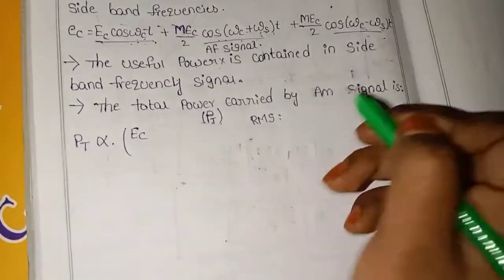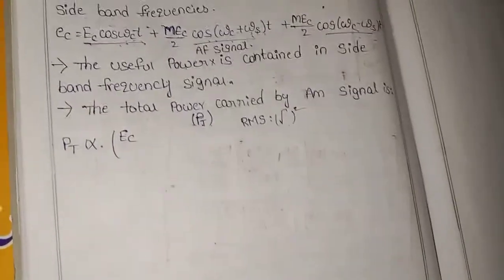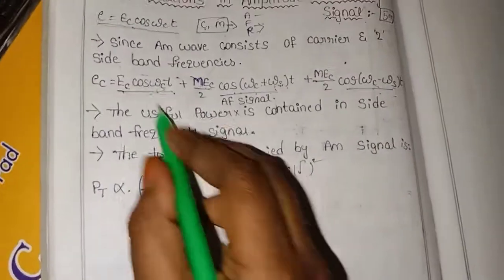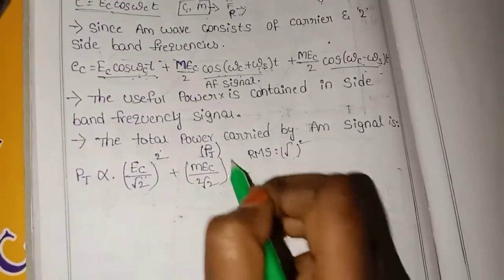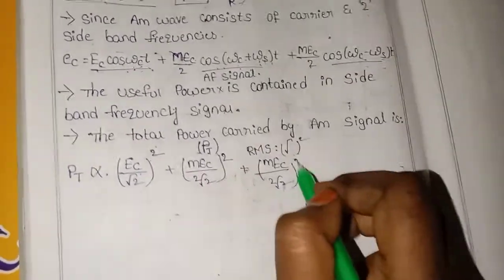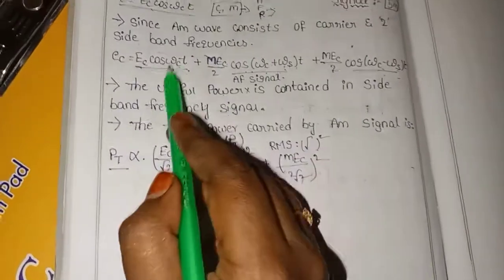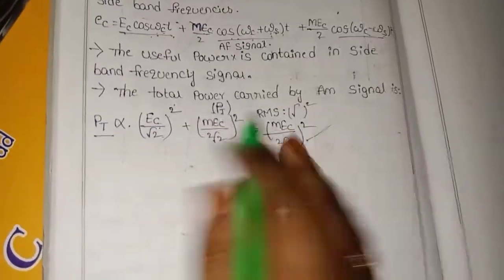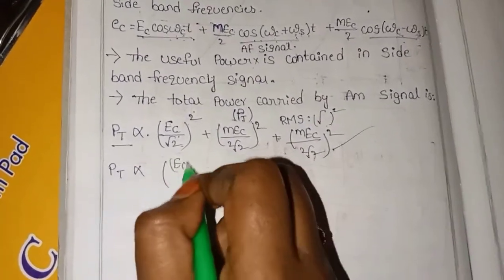The carrier signal EC is expressed as an RMS value — root mean square. Applying RMS, PT is proportional to EC whole square by 2, plus MEC by 2√2 whole square. This is the formula. PT is directly proportional to EC whole square.